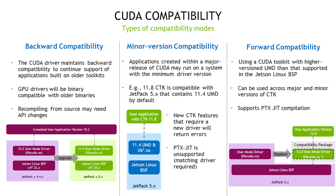Starting with the oldest and simplest compatibility mode: backward compatibility. Simply put, this means your compiled application will work forever on NVIDIA GPUs. If you have a CUDA application built with CUDA 10.2 on Xavier, that application will continue to run with an 11.8 or 12.x driver without needing to recompile it. The next mode is minor version compatibility, which enables you to continue development on whatever version of the CUDA toolkit you're using and call into drivers as long as they're both from the same major version. For example, you can work on 11.4 and run on a system with 11.8. Finally, we have forward compatibility, which is the exact compatibility mode we spoke about in the previous slides. There is another CUDA tutorial on CUDA compatibility that delves deep into each of these modes — do check that out.